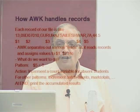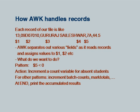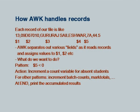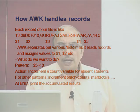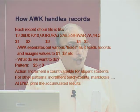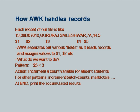Each record of our file has different fields named $1, $2, $3, $4, $5. AWK separates out various fields as it reads records. The normal field delimiter is blank, but I can describe any other delimiter — like here it will be comma — and then it will assign the values to $1, $2, etc. We can define a pattern: for example, we know absentees have negative marks, so if $5 is less than 0 the action is to increment an absent count. For all others, we increment batch counts and mark totals, and at the end print out the accumulated result. So I gave them the AWK script.